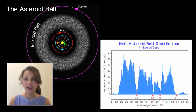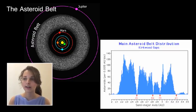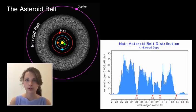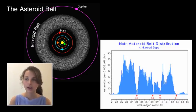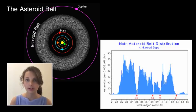The asteroid belt contains hundreds of thousands of small rocky bodies that are unable to condense into a planet under the gravitational influence of Mars and Jupiter. The asteroid belt's Kirkwood gaps occur at distances between Mars and Jupiter where no gravitationally stable orbits exist.